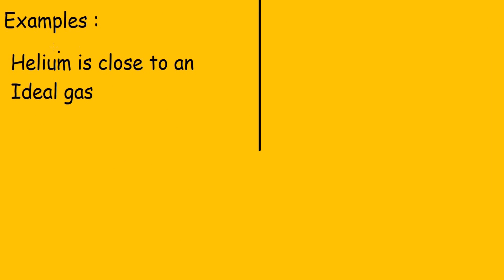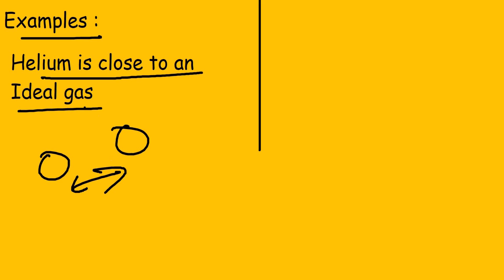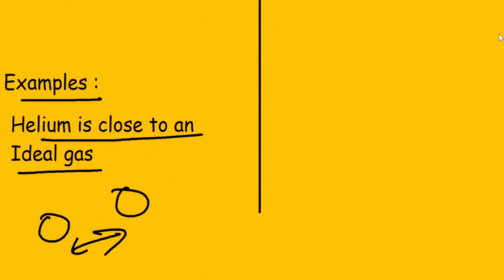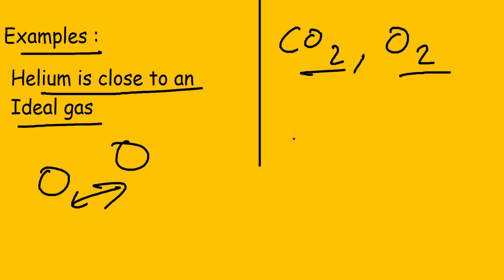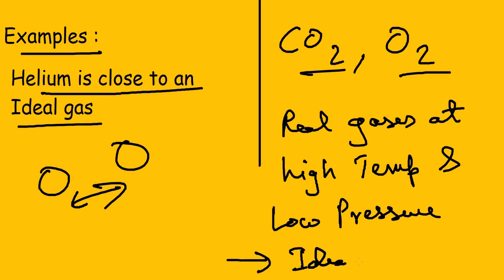As examples: helium is close to an ideal gas because helium exists in stable atomic form, so its inter-atomic forces of attraction are very small — consistent with the second point that intermolecular forces are zero for an ideal gas. Oxygen and other common gases are real gases. One important thing to remember: real gases at high temperature and low pressure tend to approach ideal gas behavior.